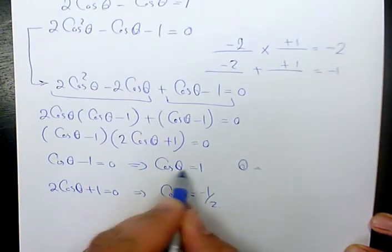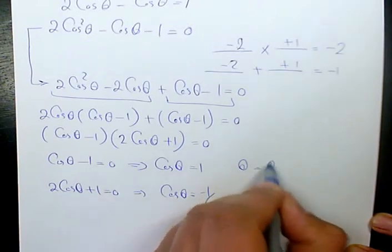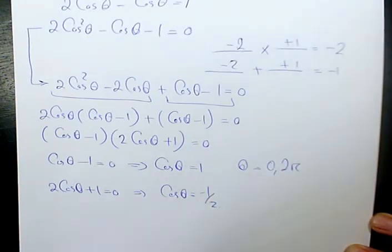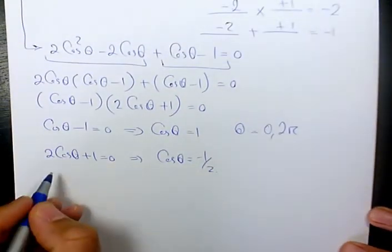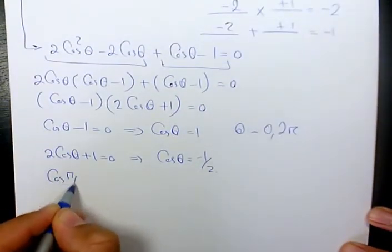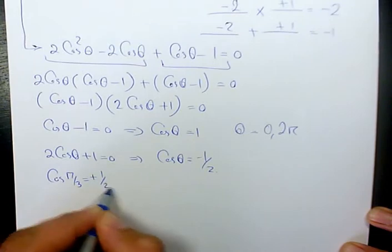So, cosine theta is 1 when theta is 0 and theta is 2 pi. Cosine theta is negative half. We had it before. Cosine pi over 3 is positive 1 over 2. But here we have negative 1 over 2.